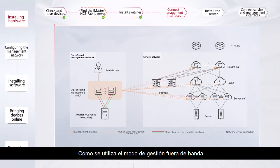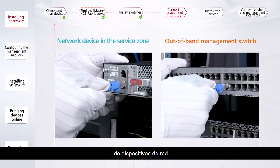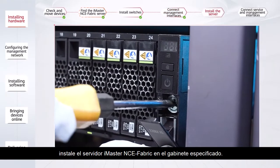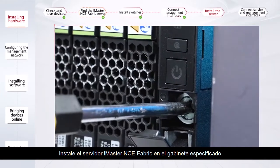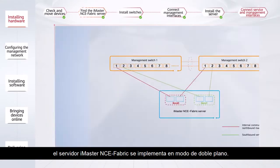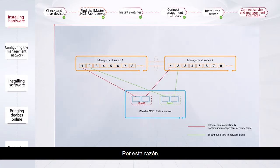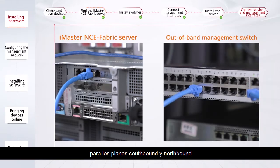As the out-of-band management mode is used in the easy scenario, you need to connect the management interfaces of network devices to the out-of-band management switches. Next, install the iMaster NCE Fabric server in the specified cabinet. According to the network plan, the iMaster NCE Fabric server is deployed in dual-plane mode. For this reason, connect the Ethernet cables for the southbound and northbound planes to the out-of-band management switches.